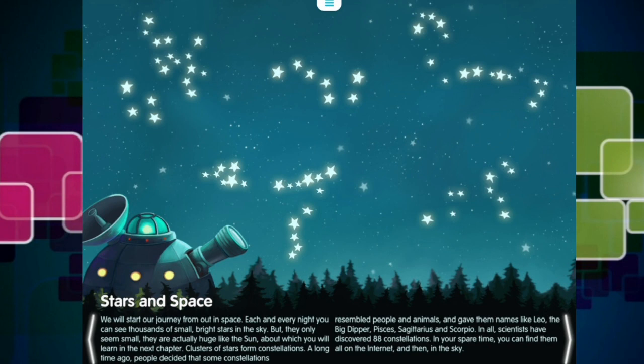Clusters of stars form constellations. A long time ago, people decided that some constellations resembled people and animals, and gave them names like Leo, the Big Dipper, Pisces, Sagittarius, and Scorpio. In all, scientists have discovered 88 constellations. In your spare time, you can find them all on the Internet, and then, in the sky.